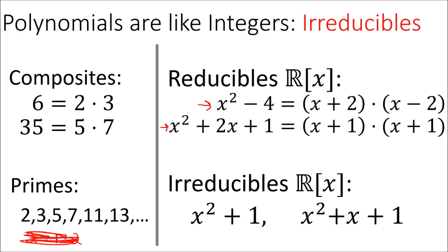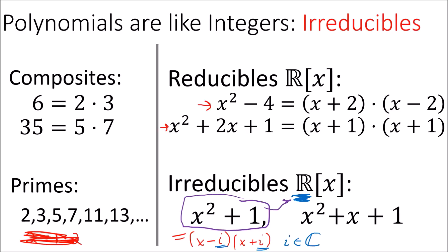Now, if you're familiar with complex numbers, you might argue that x squared plus 1 can be factored into x minus i times x plus i, where i is the square root of negative 1. But recall that the set of polynomials we were dealing with involved real coefficients, so we can't use complex numbers like i. An interesting fact about polynomials is that they can be factored with certain coefficients but not others — x squared plus 1 can't be factored in R adjoin x, but it can be factored in C adjoin x with complex coefficients.